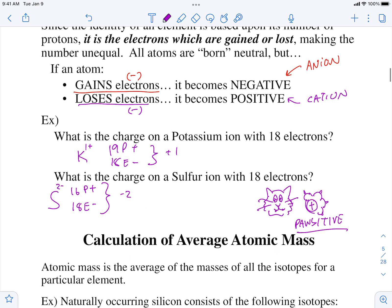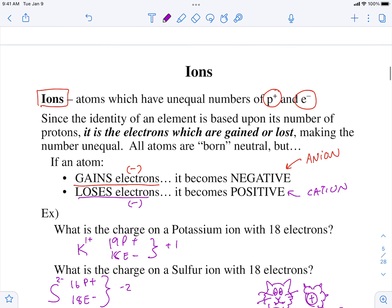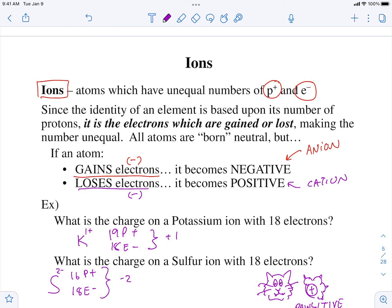So really all you're doing is you're adding them up and whatever is left over, that's what the charge is. Let me give you a couple more examples. Find the charge. So if we have aluminum with 10 electrons, if we have oxygen with 10 electrons, write the symbol for those two ions.